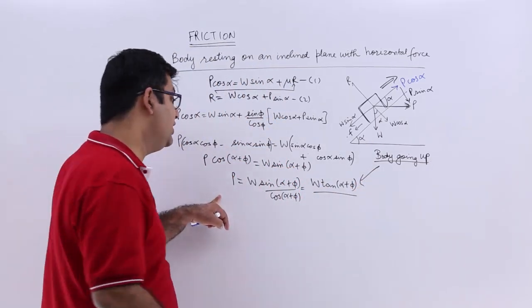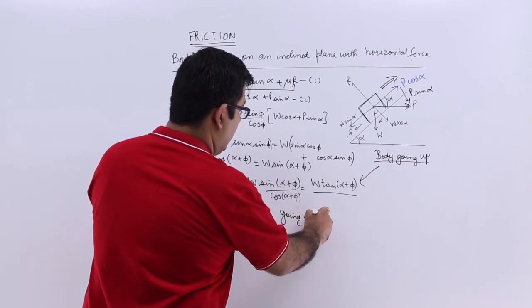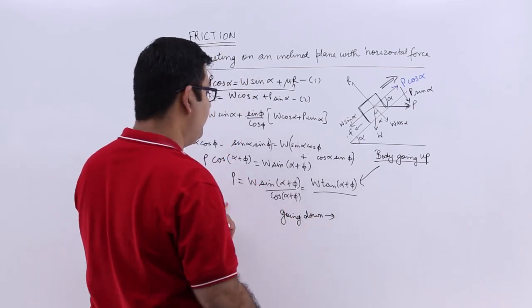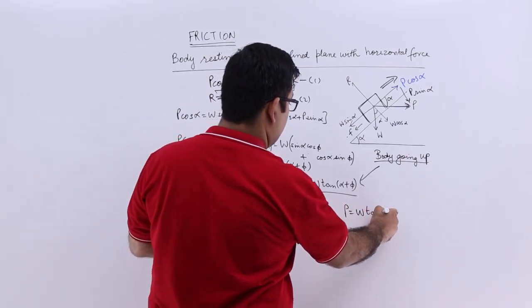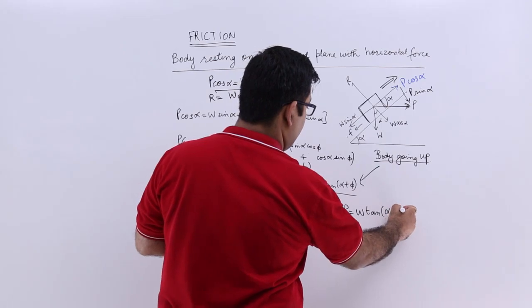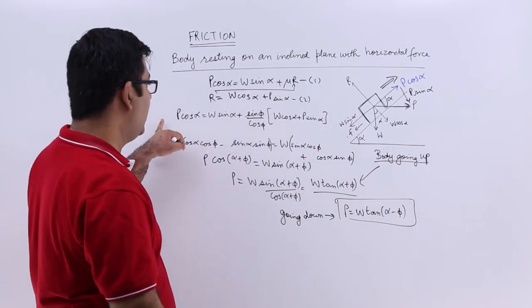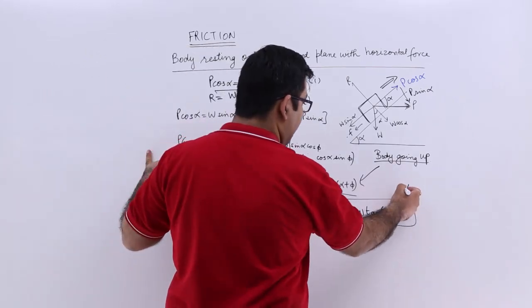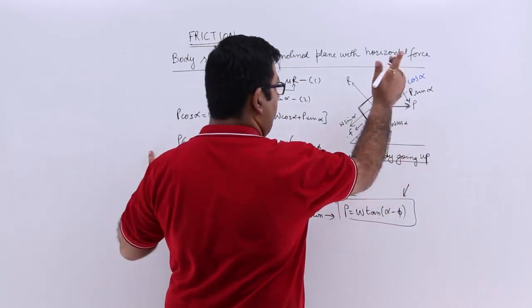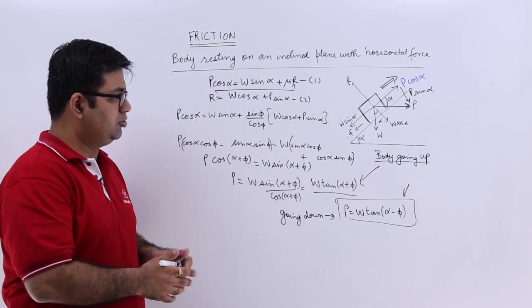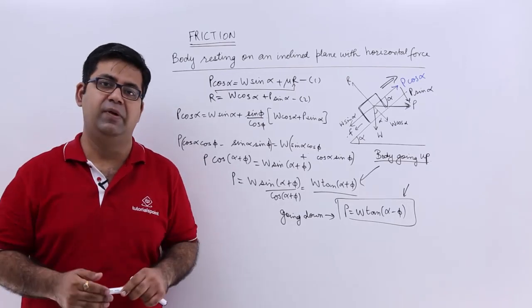In case the body is going down, P equals W tan(alpha minus phi). Make a note of this. This is how you analyze a body going down an inclined plane with a horizontal force. I hope you understood this. In the next video we will look at the efficiency of an inclined plane.